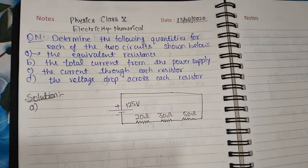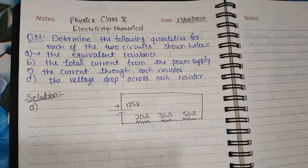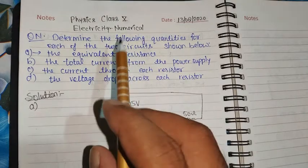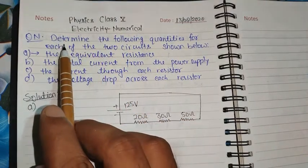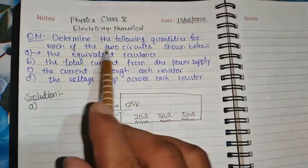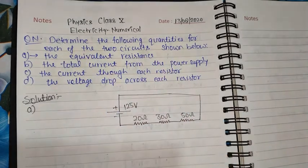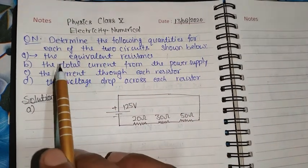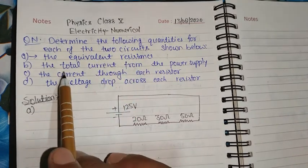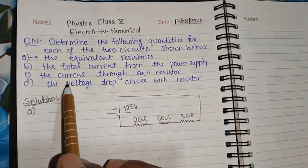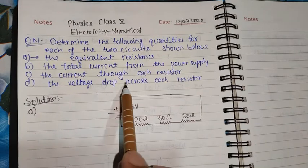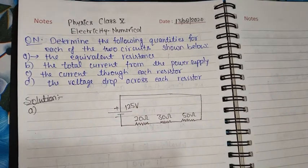Hello students, this is a new question from the chapter Electricity. The question says: determine the following quantities for each of the two circuits shown below. For circuit A, find: the equivalent resistance, the total current from the power supply, the current through each resistor, and the voltage drop across each resistor. This question was asked in the CBC examination.